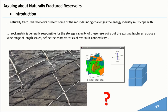The rock matrix is generally responsible for the storage capacity of these reservoirs, but the existing fractures across a wide range of length scales define the characteristics of the hydraulic connectivity, their permeability being higher than that of the rock matrix. Therefore, the flow in the reservoir is greatly affected by the fracture network. However, no single way to model and characterize fractured reservoirs exists, and there are different visions and approaches on how to deal with them.